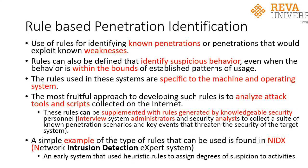Next we look at rule-based penetration identification. Here, rules are used for identifying known penetration patterns or penetrations that may exploit weaknesses of the system, user, or processor. Rules are also defined to identify suspicious behavior even when the behavior of a user is within the bounds of normal usage patterns. This is a bit more powerful than rule-based anomaly detection. However, the rules used in these systems are specific to a machine and operating system, which is one of the biggest disadvantages.